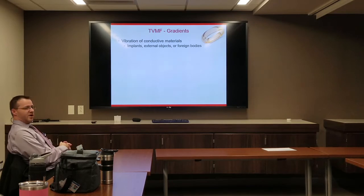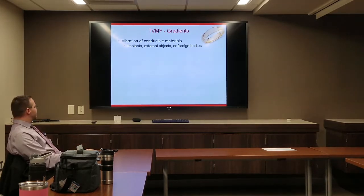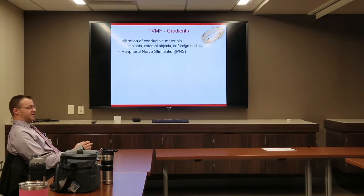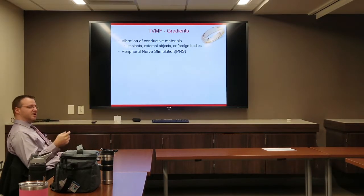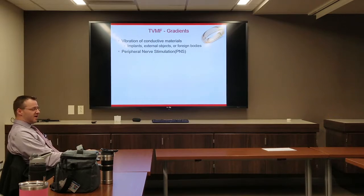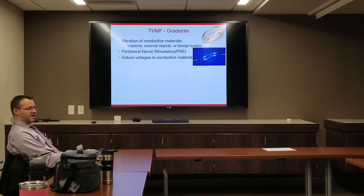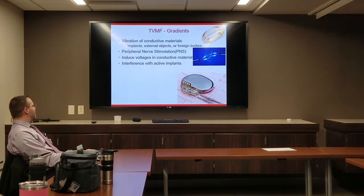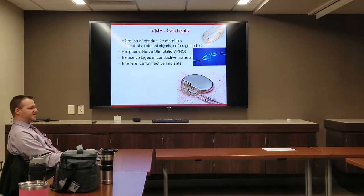The time-varying magnetic field from gradients causes vibration of conductive materials — implants, external objects, or foreign bodies. This is also the cause of peripheral nerve stimulation. Patients may experience inadvertent muscle contractions — for example, a muscle spasm in the forehead during chest or abdomen imaging sequences. It can also induce voltages in conductive materials, which is why we need to know about implants before placing people in the scanner. It can interfere with active implants such as stimulators, pacemakers, and ICDs.